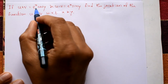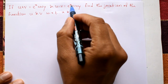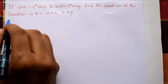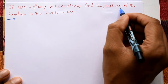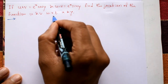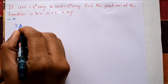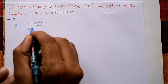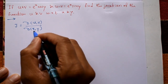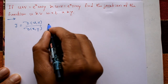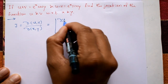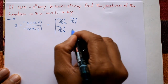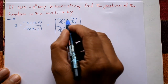Jacobian problem: if u plus v is equal to e raised to x into cos y, and u minus v is equal to e raised to x sine y, find the Jacobian of the functions u and v with respect to x and y. The Jacobian J of (u,v) with respect to (x,y) is the determinant of the matrix with entries ∂u/∂x, ∂u/∂y, ∂v/∂x, and ∂v/∂y.